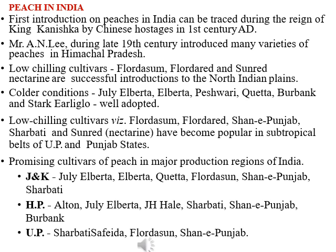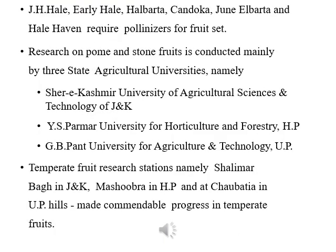Some low-chilling cultivars that became popular in subtropical belts of UP and Punjab states are Florism, Florida Red, Shani Punjab, Sharbati, and Sun Red. Some promising cultivars of peach in major producing regions of India — JNK, Kumaon, Pradesh, UP — are discussed here. Other varieties that require pollinators for fruits are Jade Hale, Early Hale, Halberta, Kendoka, June Alberta, and Hale Heaven.